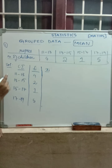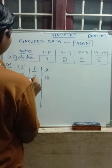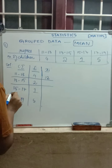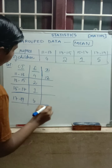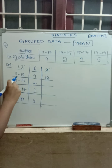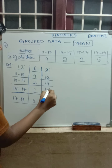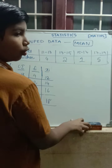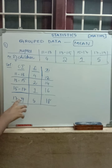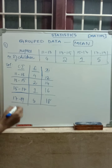Calculating Xi: for 11 to 13, (11+13)/2 = 24/2 = 12. For 13 to 15, (13+15)/2 = 14. For 15 to 17, (15+17)/2 = 32/2 = 16. For 17 to 19, (17+19)/2 = 36/2 = 18. So the Xi values are 12, 14, 16, 18 — increasing by 2 each time as expected.